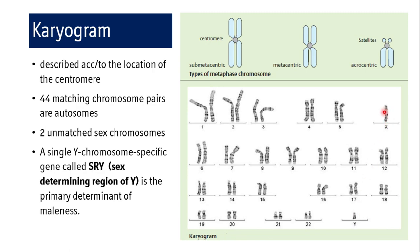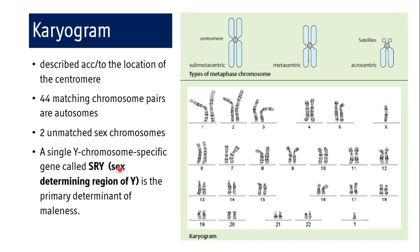There are two unmatched sex chromosomes — X and Y. The X chromosome is bigger than Y. A single Y chromosome-specific gene called the SRY gene — sex determining region of Y — is the primary determinant of maleness. SRY is one of about 110 protein-coding genes on the Y chromosome. Although X and Y chromosomes differ in size and shape, the two ends of both chromosomes have homologous DNA sequences known as pseudo-autosomal regions or PARs.